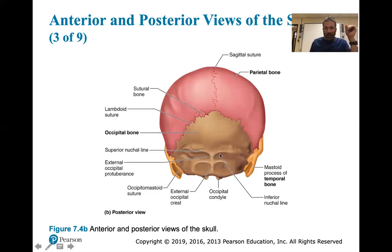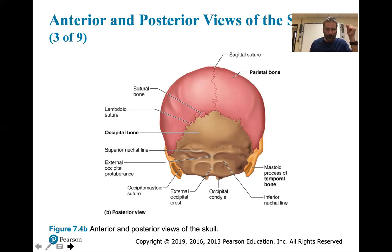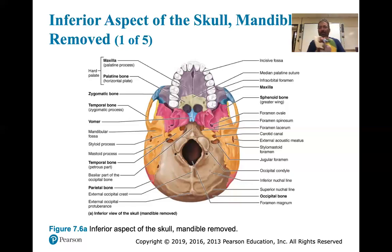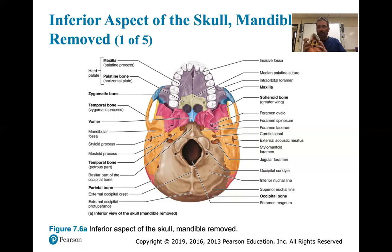Here's the posterior view showing the superior and inferior nuchal lines where neck muscles attach. This is viewed from inferior to superior - looking up from the palate. The mandible has been removed in this view. Students tend to remove it in lab, which breaks the springs.